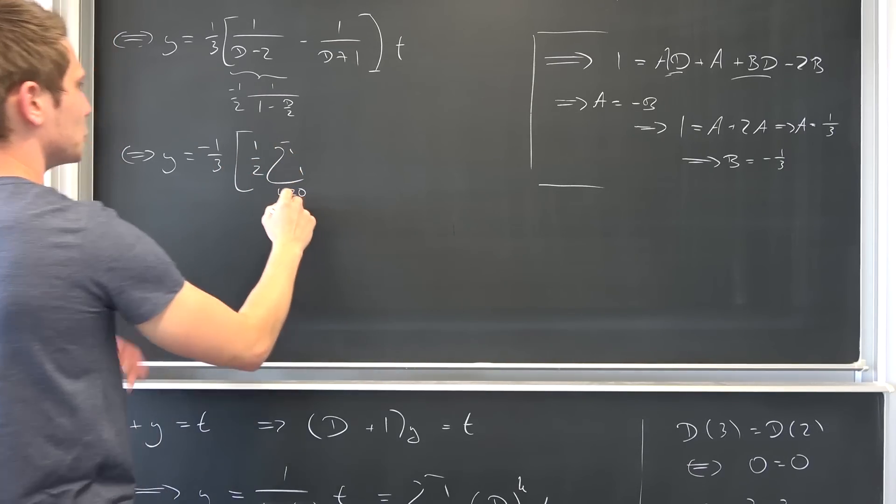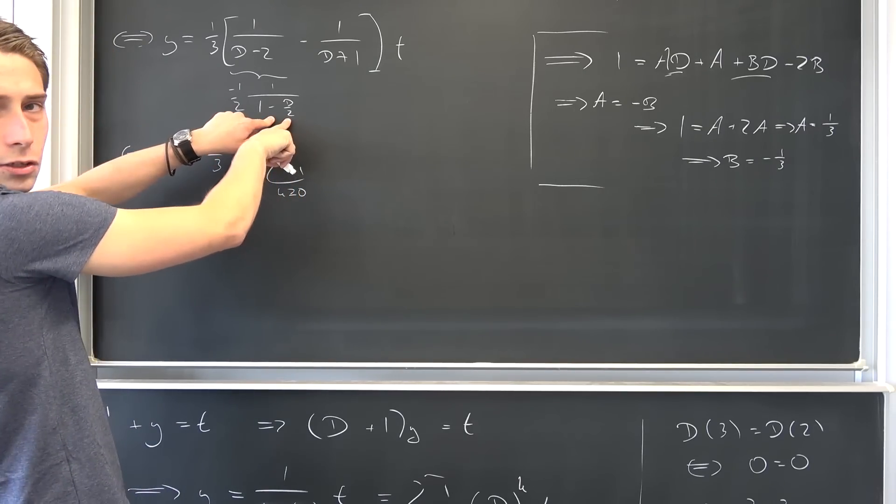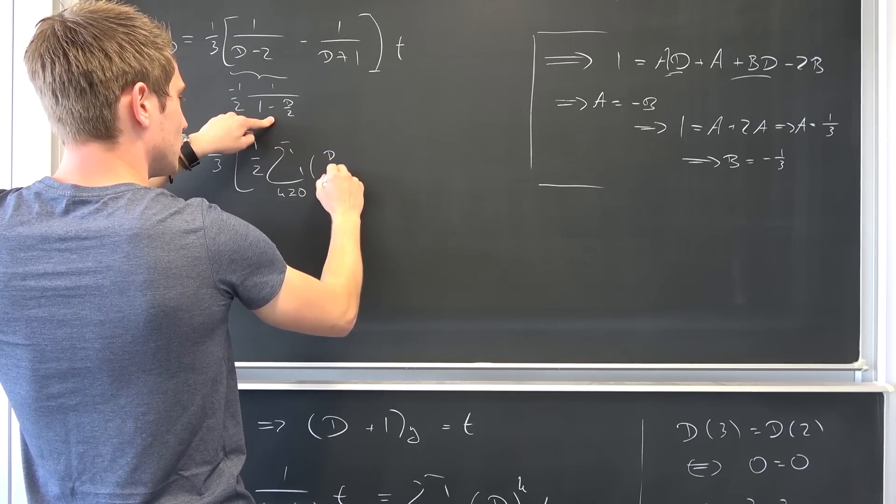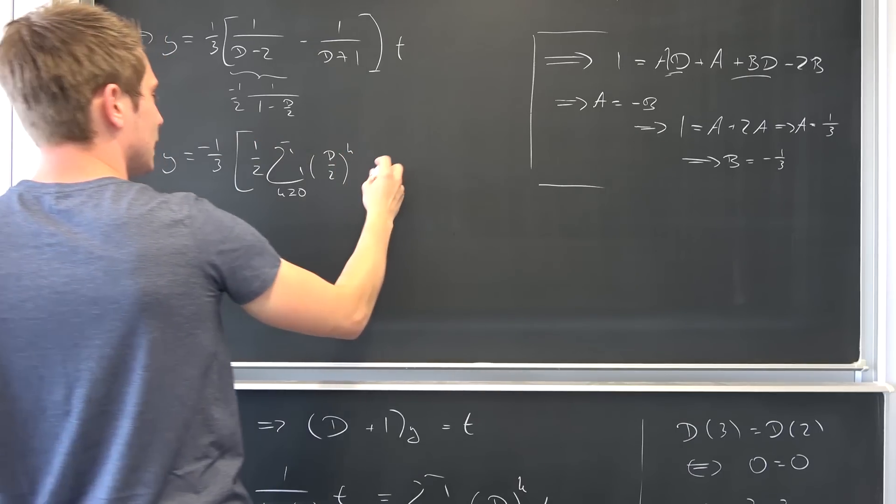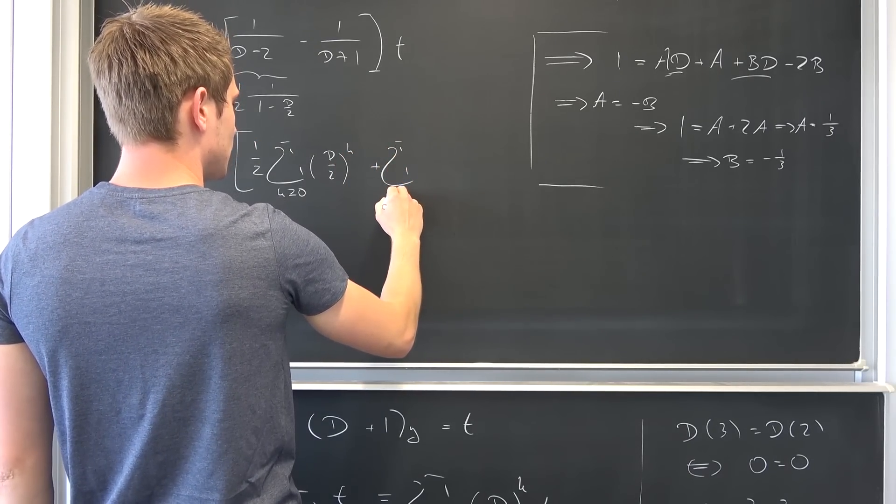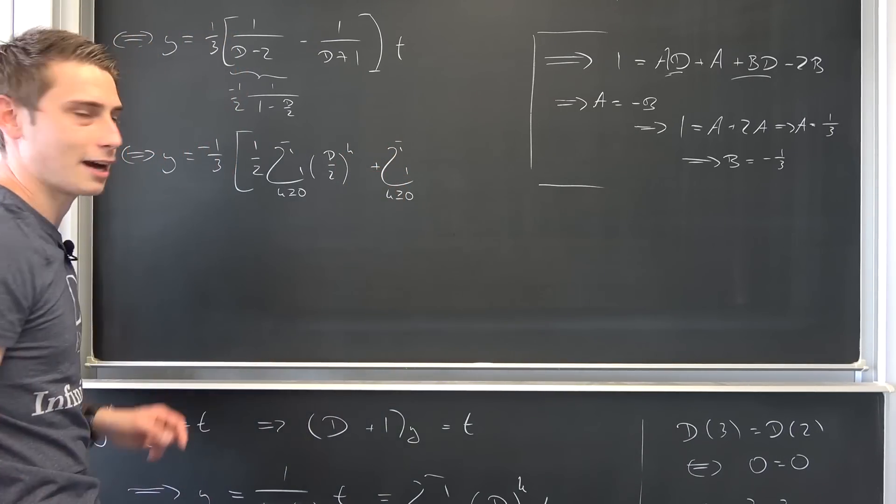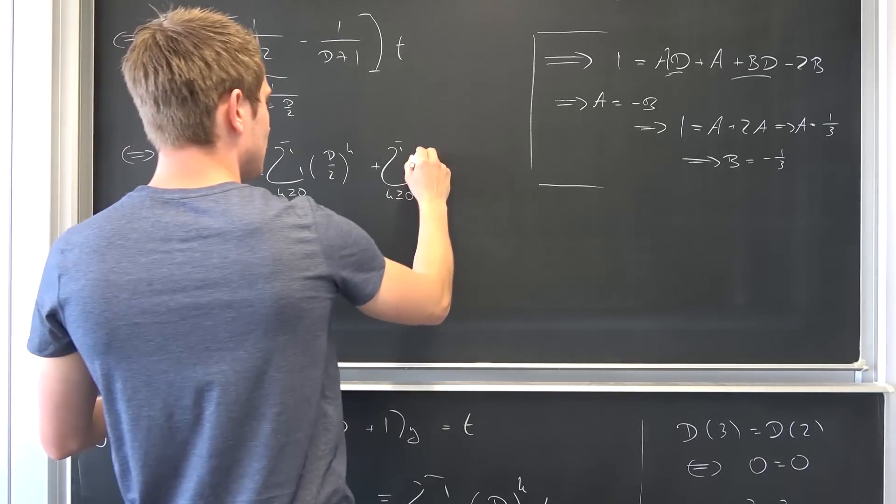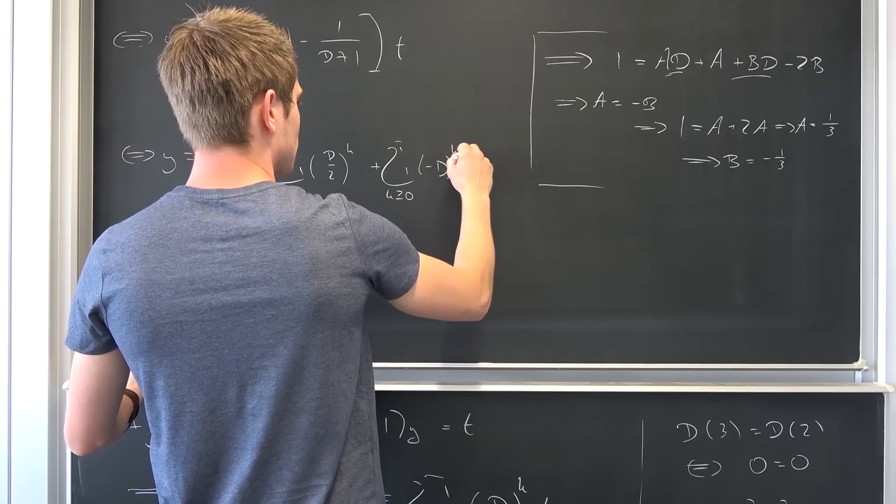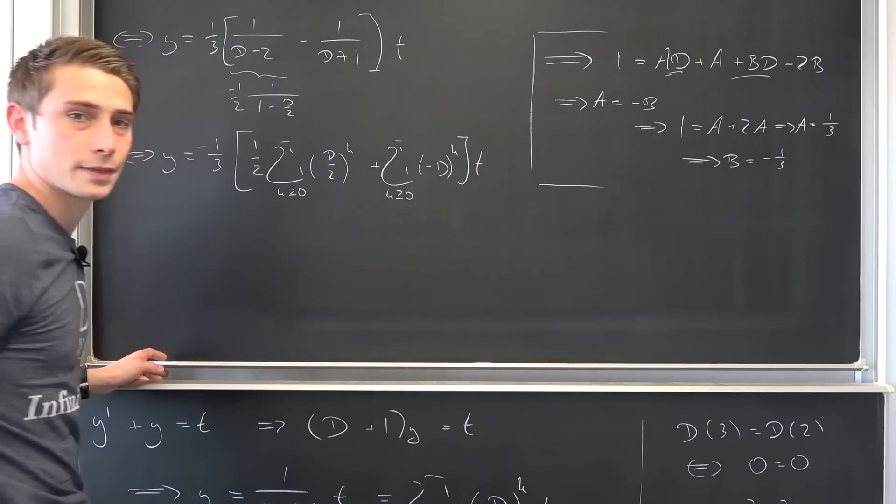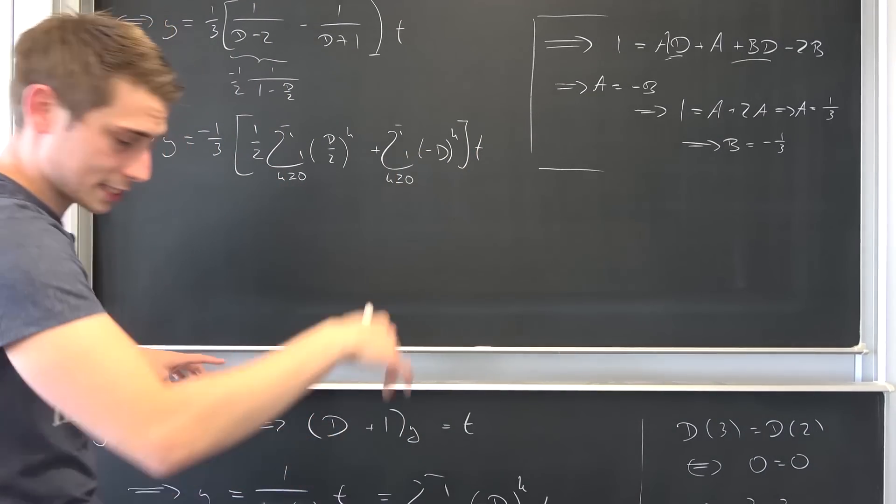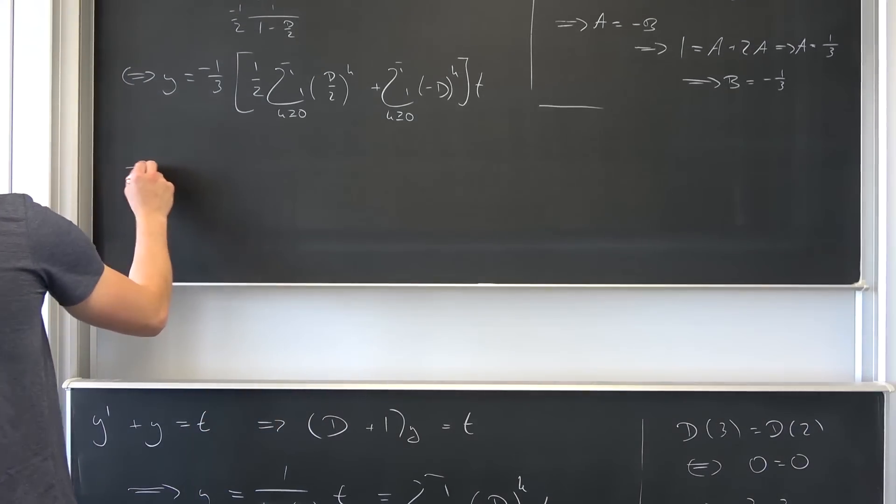I'm going to bring it to the outside. Okay, this is something we can do and then one half, k greater or equal to zero of, okay, this is going to give us (D over 2) to the kth power, and then also plus formal Taylor series k being greater or equal to zero. That's an ugly looking sigma right here, I'm terribly sorry. And then once again negative D to the kth power times t.